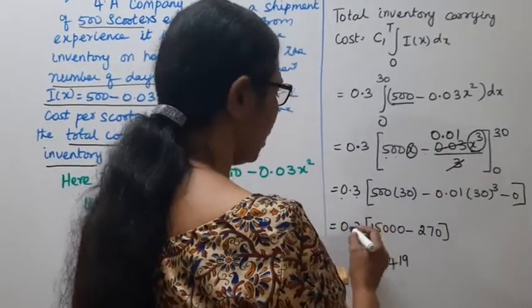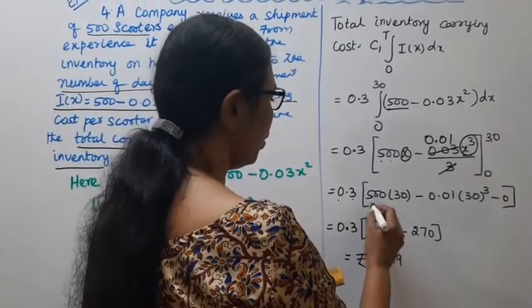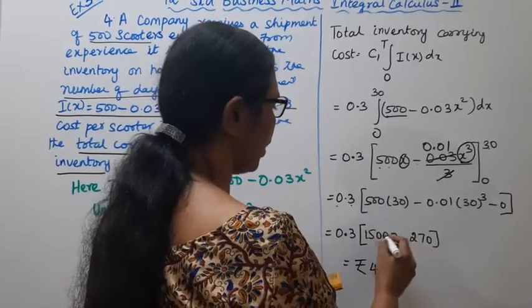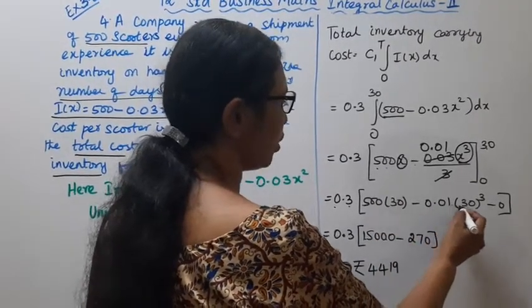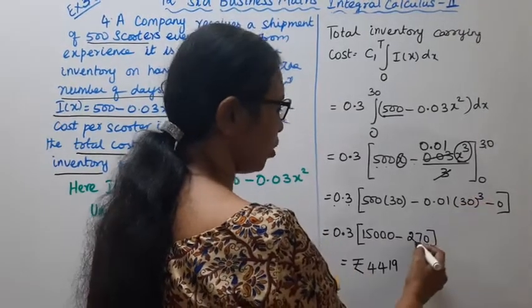That's 0.3 times (500 × 30 = 15,000 minus 0.01 × 30³ = 270), which equals 0.3 times (15,000 - 270) = ₹4,419.